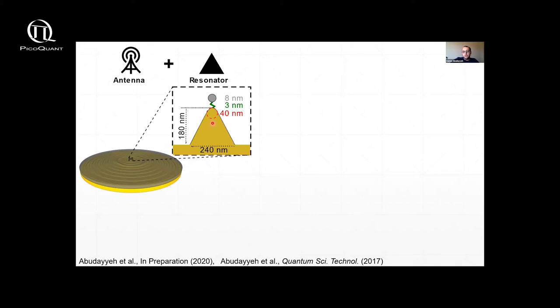And the reason why we chose this nanocone is because, well, first it has a very large field enhancement near the tip due to the lightning rod effect. But secondly, we have a very nice method of binding quantum dots selectively to the nanocone tip.